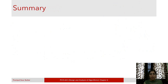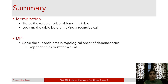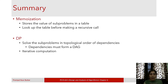To summarize: in memoization, we store values of subproblems in a table and look up the table before making a recursive computation. In dynamic programming, we solve subproblems in the topological order of their dependencies. The condition is that dependencies must form a directed acyclic graph, as seen in the Fibonacci example. The computation in dynamic programming is iterative — we can use a for loop.